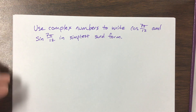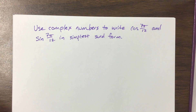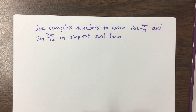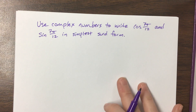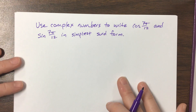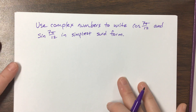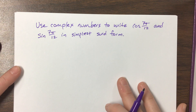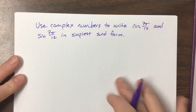We're continuing with some of our properties of working with complex numbers in polar form. The book gave us an example that said to use complex numbers to write cosine of 7π/12 and sine of 7π/12 in simplest surd form.